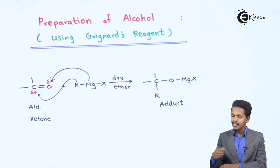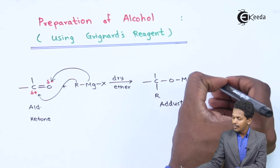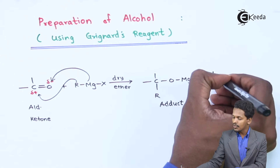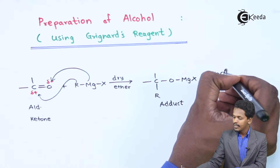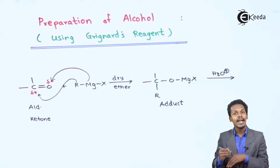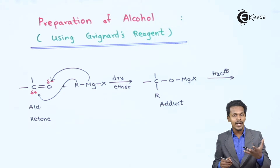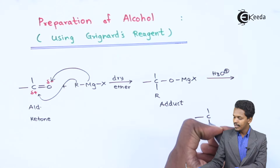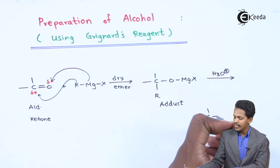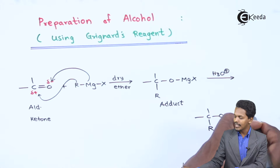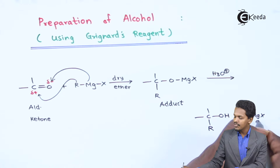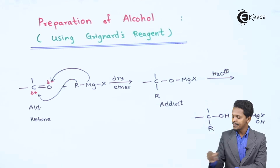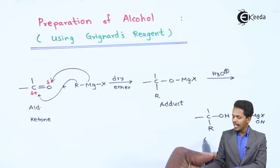This adduct is not the final product we want. We need the alcohol, so the final product is only obtained when we treat this adduct with hydrolysis. After hydrolysis, the product we obtain is a carbon bearing R and OH, with the byproduct being MgX·OH. This is how we obtain an alcohol.